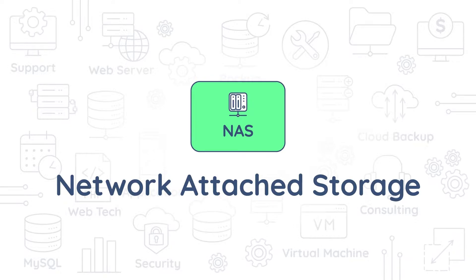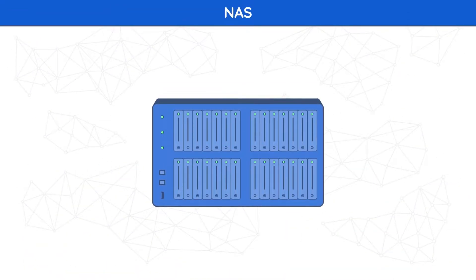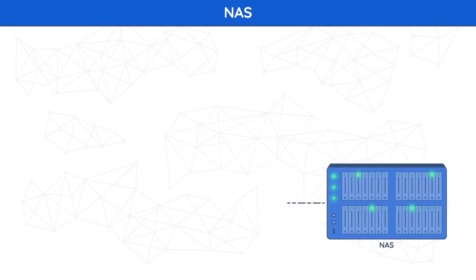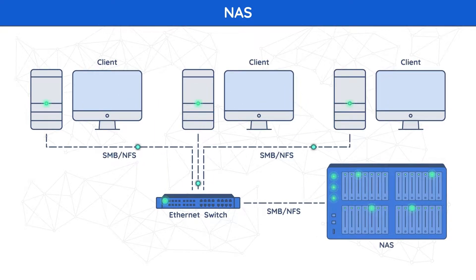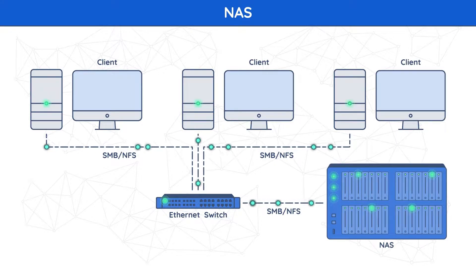Network Attached Storage — NAS — consists of a number of disks arranged, in most cases, in a certain RAID level to maximize overall performance and achieve the required data redundancy. Such devices have core operating systems allowing low-level processing and file system management. File systems, in turn, share the disk content over the network at the object level over high-level protocols like SMB or NFS.